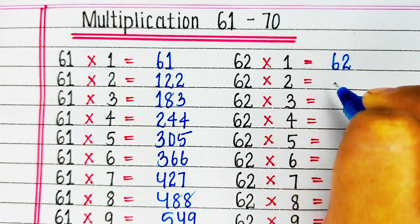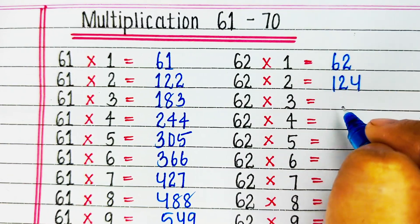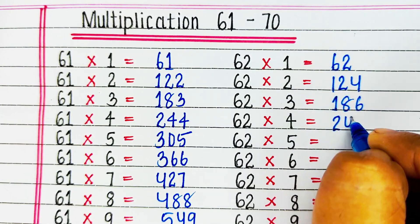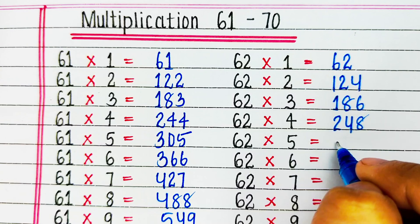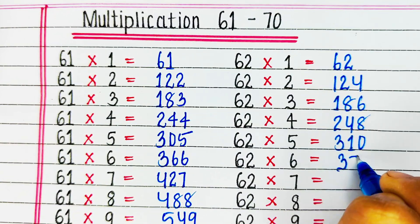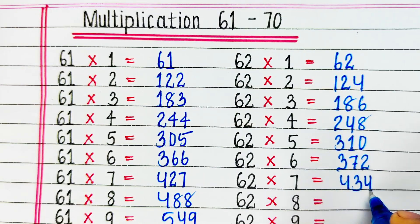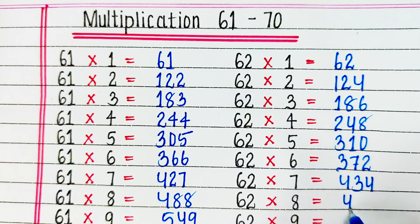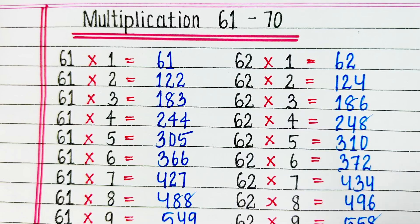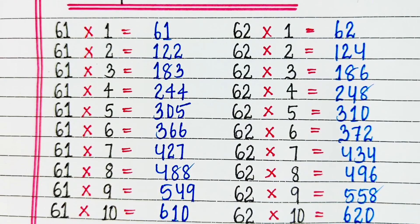Next is table of 62. 62 1s are 62, 62 2s are 124, 62 3s are 186, 62 4s are 248, 62 5s are 310, 62 6s are 372, 62 7s are 434, 62 8s are 496, 62 9s are 558, 62 10s are 620.